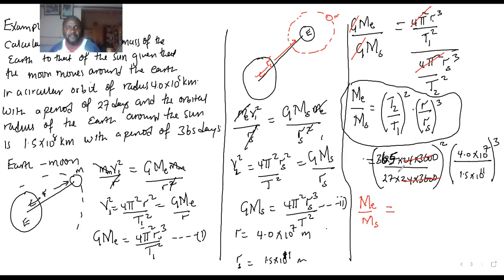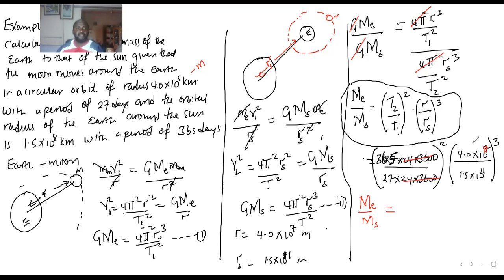A student asks whether the radius was 10 to the power 5 or 7. The teacher confirms it was given in kilometers as 10 to the power 5, so you have to convert to meters — it should be to the power 8. Similarly, the other radius in kilometers was 10 to the power 8, converted to power 11 in meters. The teacher confirms these unit conversions are necessary.